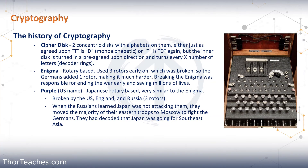Now let's take a look at cipher disks. A cipher disk is two concentric disks with alphabets on them — one disk is bigger, the other is smaller. If it is monoalphabetic or static, just like we looked at before, then T, for instance, will always be a D. But normally you would turn the inner disk a certain number of letters in one direction after so many uses. So for every 5, 10, or 20 letters, we might rotate the inner disk three spaces to the right. Then we do another five letters in that position and then we rotate it again, which brings us to the Enigma.